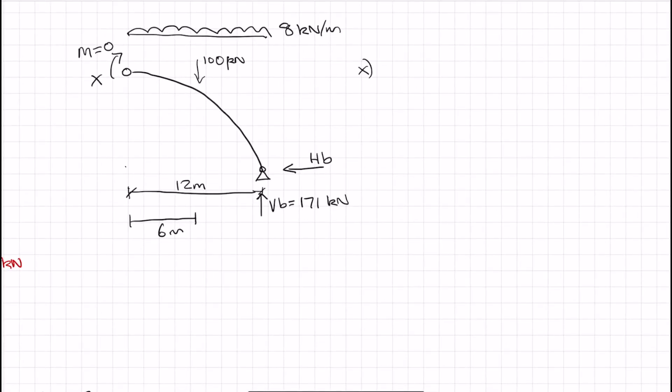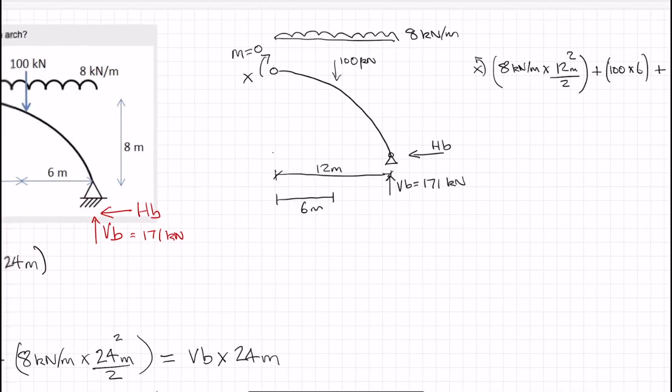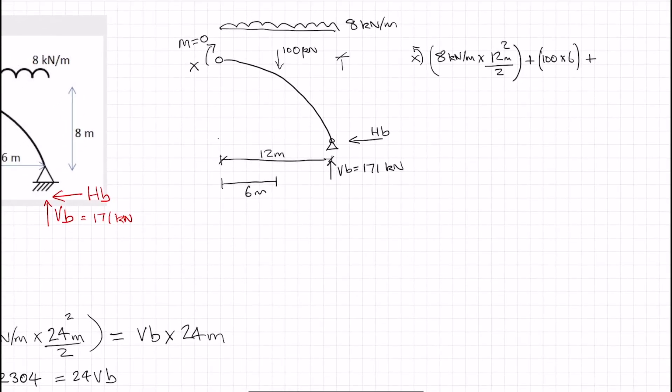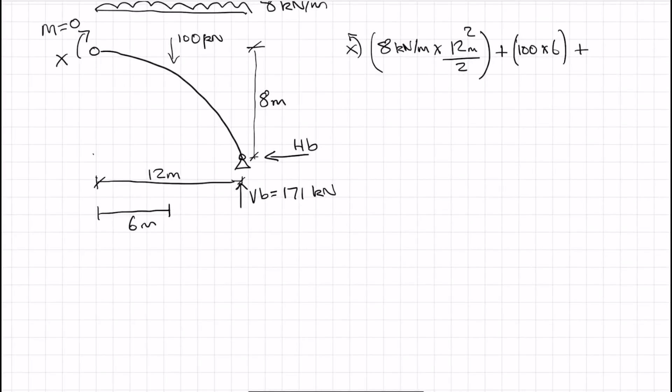So let's resolve moments about X. Let's do this up here. So let's sum up all the clockwise moments. So we have 8 kilonewtons per meter times by 12 meters. And that was squared over 2 because that now incorporates the lever arm. Plus 100 times 6 meters. Plus we need the height of the arch. That's 8 meters. 8HB is equal to 171 kilonewtons times that length, which is 12 meters.